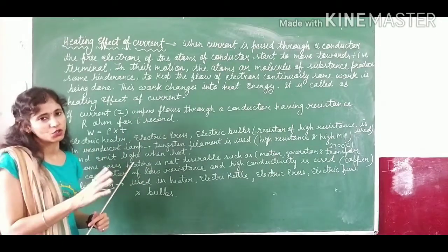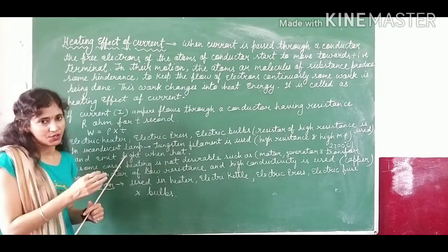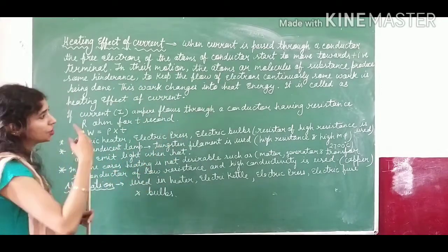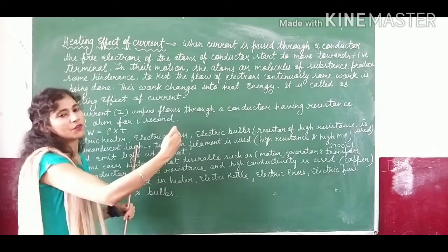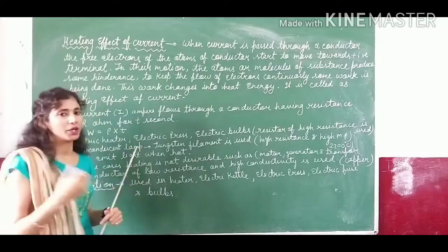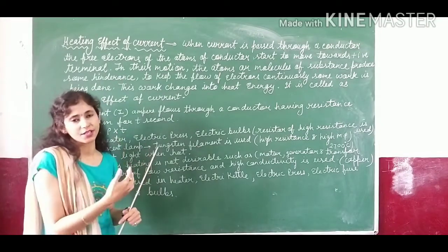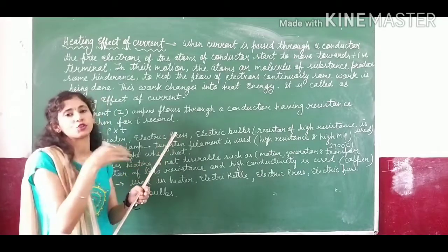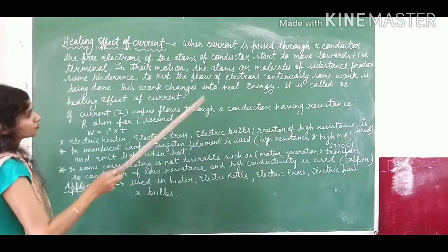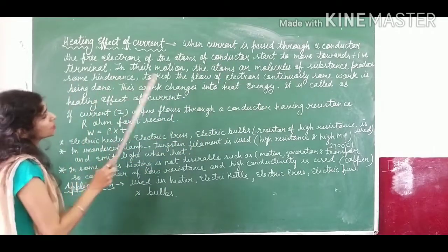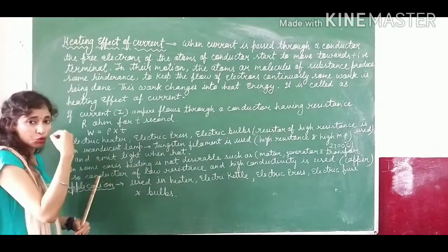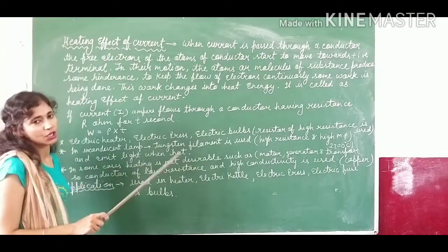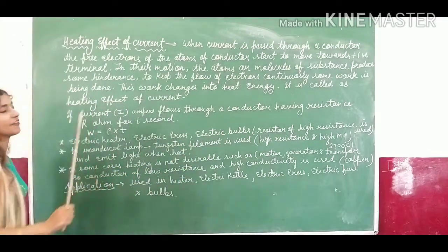So overall, whenever electric current is passed through a conductor, the free electrons start to move and some hindrance is produced. To keep the flow of electrons moving in the proper direction, some work needs to be done. The electrons are moving but hindrance creates a problem, so to maintain the continuous flow of electrons, some work must be done — and that work changes into heat energy. This is called the heating effect of electric current.